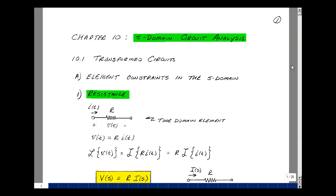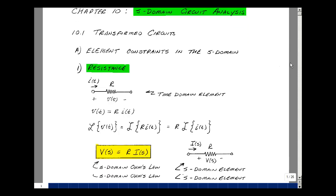Let's take a look at a resistance and how it maps from the time domain to the S-domain. In ECE-201, we had a resistance R, and if we had a current I of T flowing in it, then we had a drop from plus to minus, current entering the plus, leaving the minus, absorbing power, and our relationship was that the voltage V of T was R times I of T. Taking the Laplace transform of both sides, the Laplace transform of V of T is V of S, and the Laplace transform of R times I of T equals R times the Laplace transform of I of T, since R is not a function of time — just a scalar. So here's our S-domain equivalent of Ohm's Law.